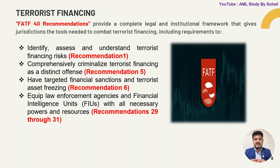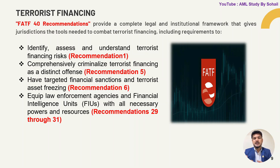FATF Recommendations 29 to 31: equip law enforcement agencies and Financial Intelligence Units with all necessary powers and resources. We need to give our law enforcement agencies and FIUs the power to take necessary steps. We also need to give them resources — professionals, tools, and different types of infrastructure. Countries' governments should facilitate FIUs to do this as part of the FATF recommendations.